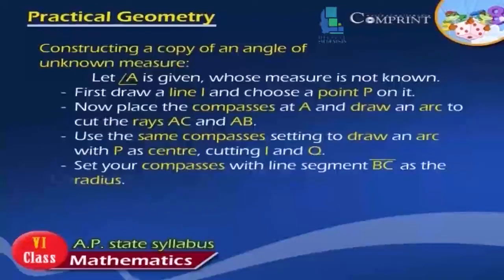Constructing a copy of an angle of unknown measure: Let angle A is given, whose measure is not known. First, draw a line L and choose a point P on it. Now, place the compass at A and draw an arc to cut the rays AC and AB. Use the same compass settings to draw an arc with P as center, cutting L at Q.